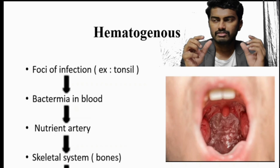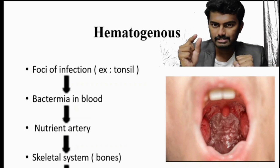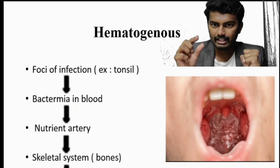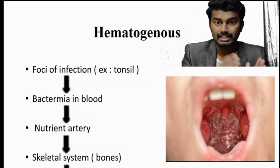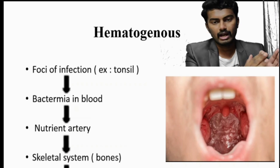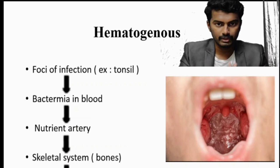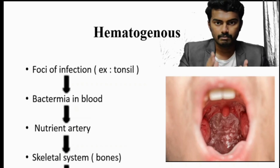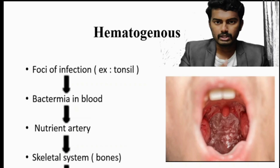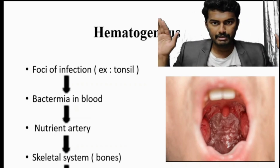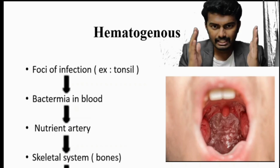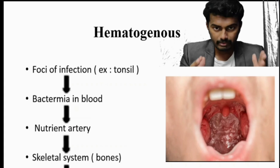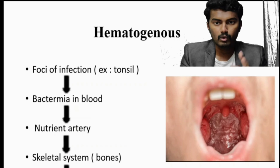For hematogenous spread: when the vessel lumen is narrower than the bacteria size, the bacteria occludes that vessel — this is called the nutrient artery, which supplies the inner two-thirds of the bone. In appendicular bones (lower and upper limbs), osteomyelitis is more common than in axial bones (the spine, which is more commonly involved in TB). The most commonly involved site is the metaphysis of the distal femur, followed by the proximal tibia.